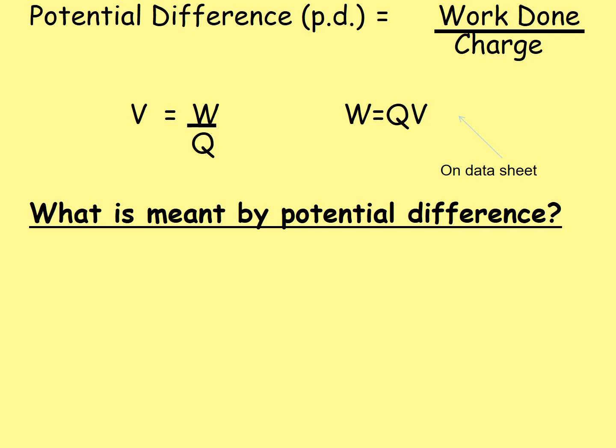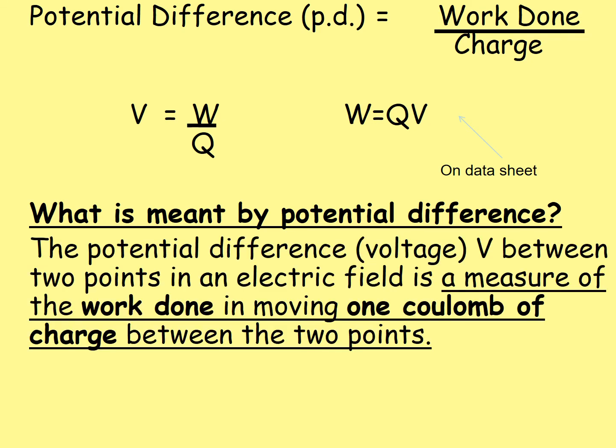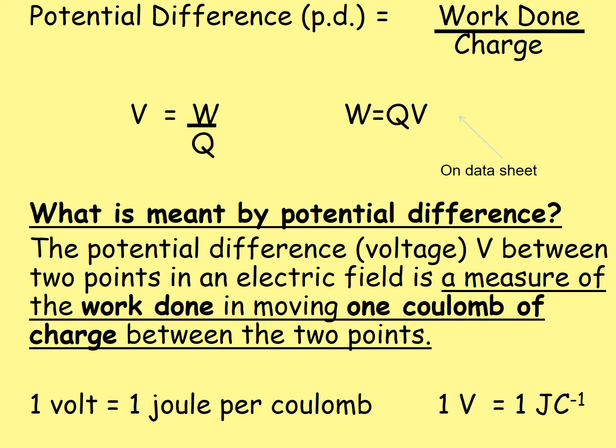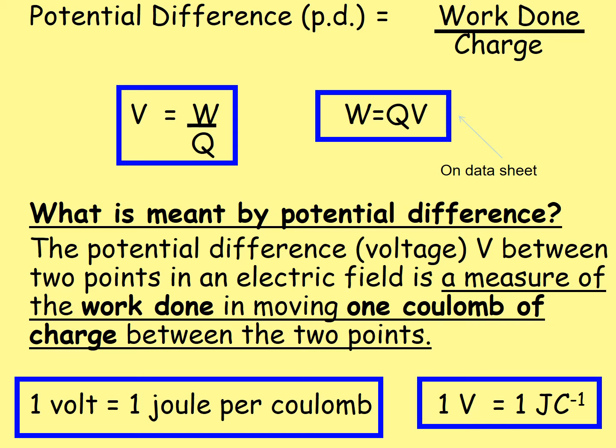What is meant by potential difference? The potential difference, or voltage V, between two points in an electric field is a measure of the work done in moving one coulomb of charge between those two points. So we can say that one volt is equal to one joule per coulomb: 1V = 1 JC⁻¹. This is a common multiple choice question. The key parts to remember are the equation W = QV from the relationship sheet, and the definition that one volt is equivalent to one joule per coulomb.